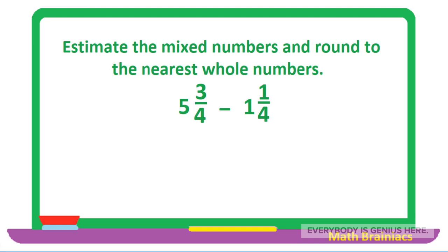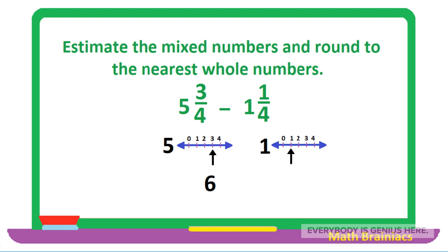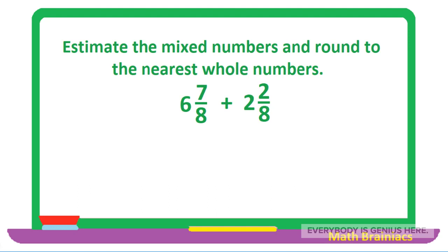Let us work on another example. Estimate the mixed numbers and round to the nearest whole numbers: 5 and 3 fourths minus 1 and 1 fourth. We represent the fractions through the number line. The first fraction is 3 over 4 — the arrow points to number 3. The numerator is as large as the denominator, so it rounds up to 1; accordingly 5 plus 1 gives us 6. The second fraction is 1 over 4 — the arrow points to number 1, which is much smaller than the denominator, so 1 over 4 rounds down to 0; accordingly 1 plus 0 gives us 1. Therefore, 6 minus 1 gives us 5.